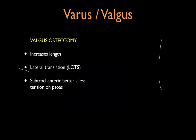Valgus osteotomy increases length and requires significant translation, so it is better done at the subtrochanteric level. If done above the trochanter, the iliopsoas gets kinked, producing a flexion deformity. To achieve stable fixation with adequate hold on the proximal fragment, subtrochanteric level is preferred. Historically, Pauwels' osteotomy at the intertrochanteric level is constrained by available bone. With modern implants, adequate hold allows correction of large deformities. A Pauwels Y-shaped or V osteotomy with lateral closing wedge can only correct small deformities, but translation is less because it is closer to the CORA.